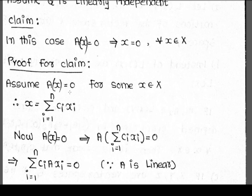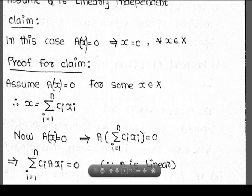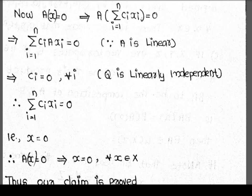To prove this, assume A(x) = 0 for some x in X. Write x = summation i=1 to n of c_i · x_i in the basis. Then A(x) = summation i=1 to n of c_i · A(x_i) = 0. Since q = {A(x1), ..., A(xn)} is linearly independent, all c_i = 0.